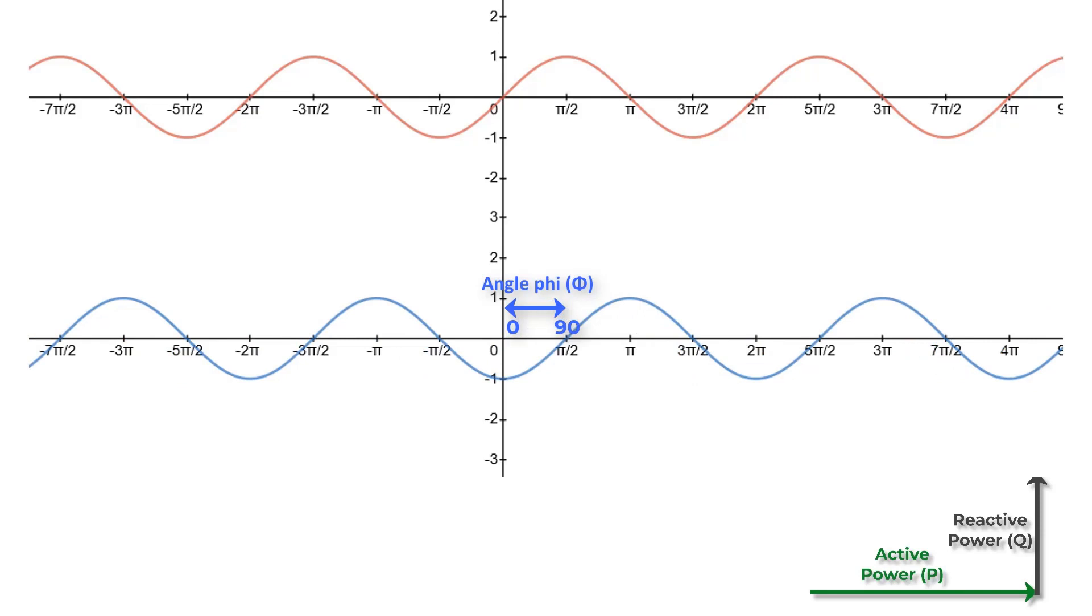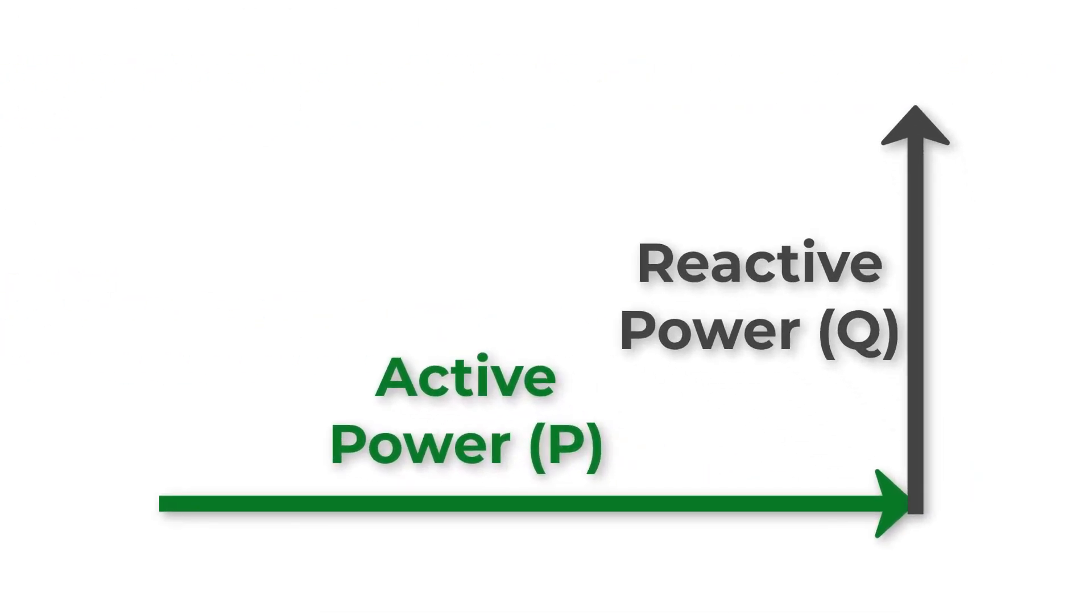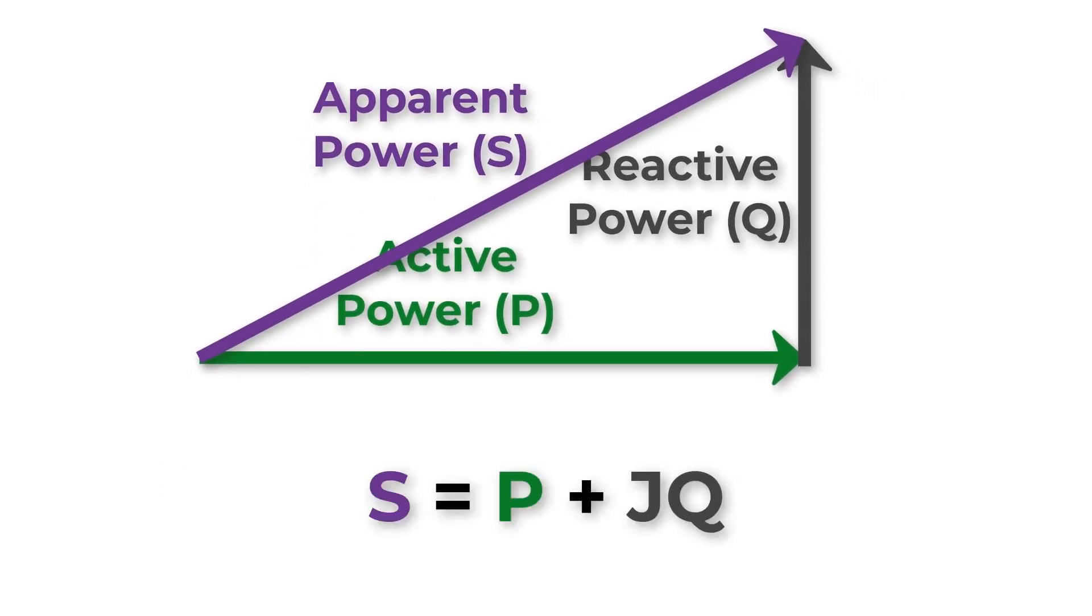So now we have P and Q together, which is called apparent power S. So S equals P plus jQ. In math, j means P and Q are perpendicular to each other. So S is the total power that the load consumes.